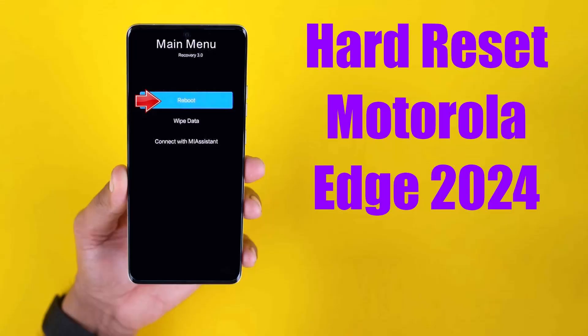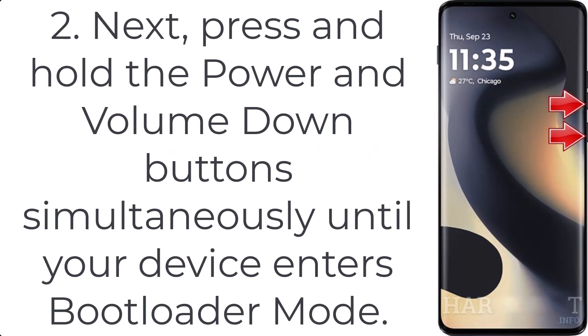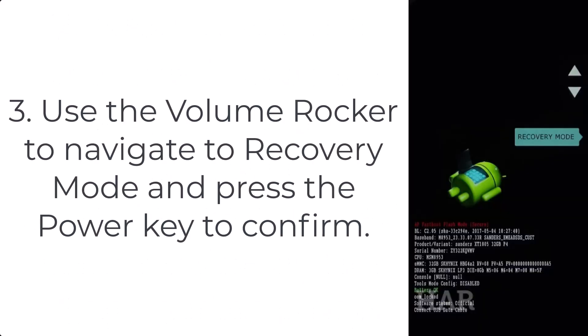How to hard reset Motorola Edge 2024. Step 1: First, power off your device. Step 2: Next, press and hold the power and volume down button simultaneously until your device enters bootloader mode. Step 3: Use the volume rocker to navigate to recovery mode and press the power key to confirm.